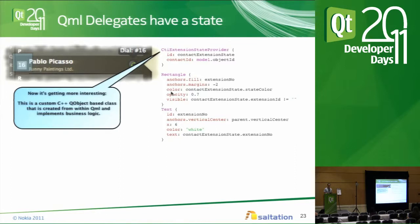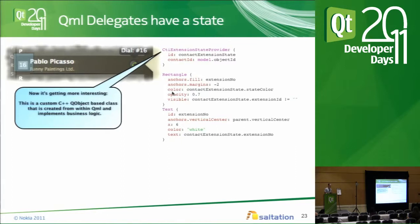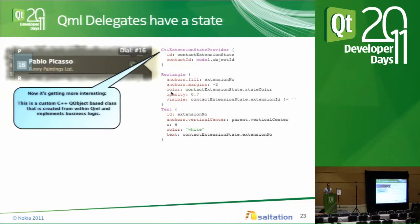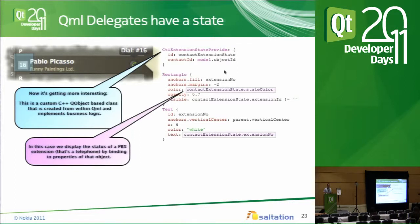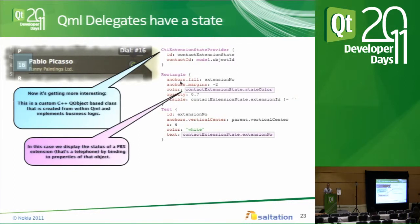But it's getting more interesting. With Qt Quick, it's quite easy to add your own QObject-based business logic inside the C++ environment and simply inject it into the Qt Quick environment. As soon as you are doing that, you are able to instantiate your business logic objects from inside Qt Quick. We have this object called CDI Extension State Provider that gives us some additional information for the entry we've selected. This is all you need to get your business logic inside the Qt Quick environment — just two lines to connect your business logic to the visual appearance.